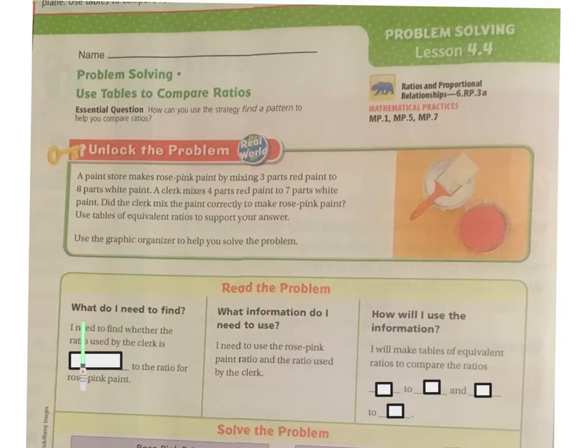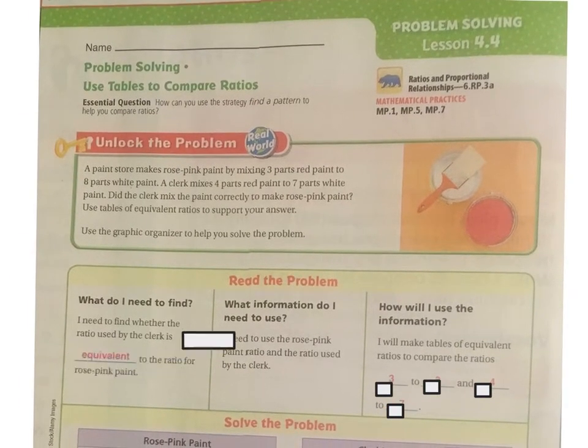This is very similar to what we did yesterday. So what do I need to find? I need to find whether the ratio used by the clerk is equivalent to the ratio for the rose pink paint. We talked about yesterday how those were equivalent fractions. Essentially that's what we were doing when we were doing our ratios.